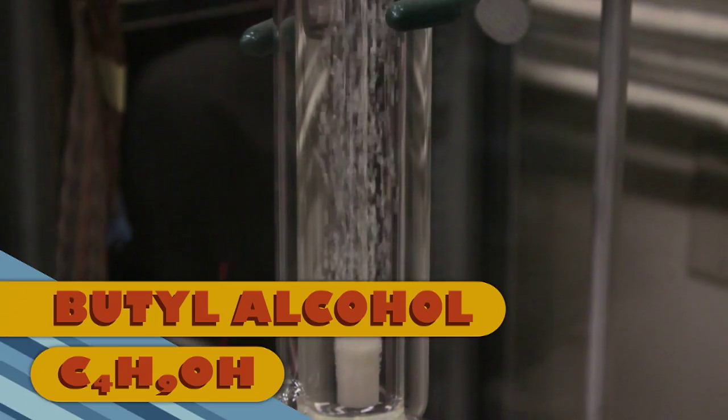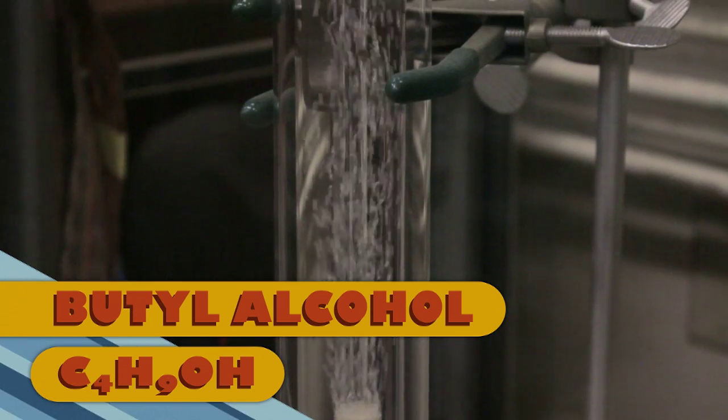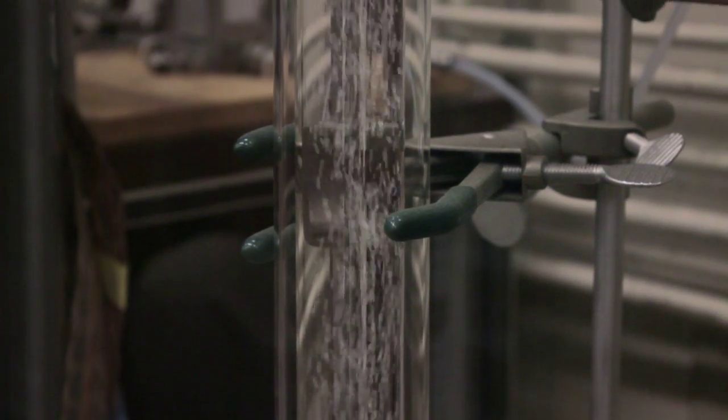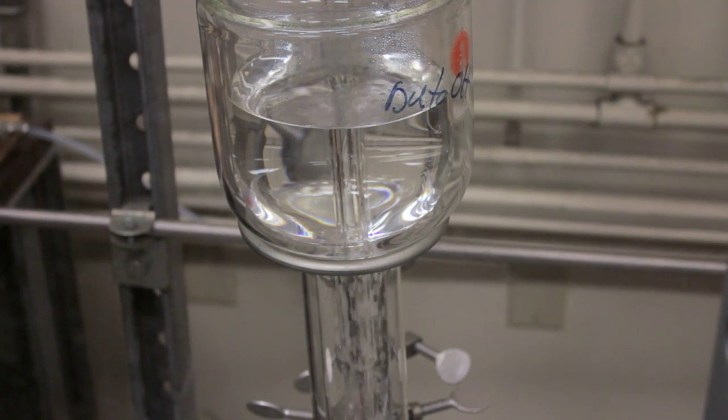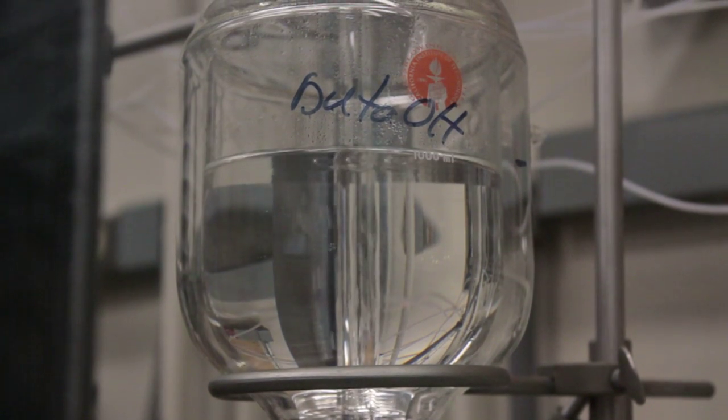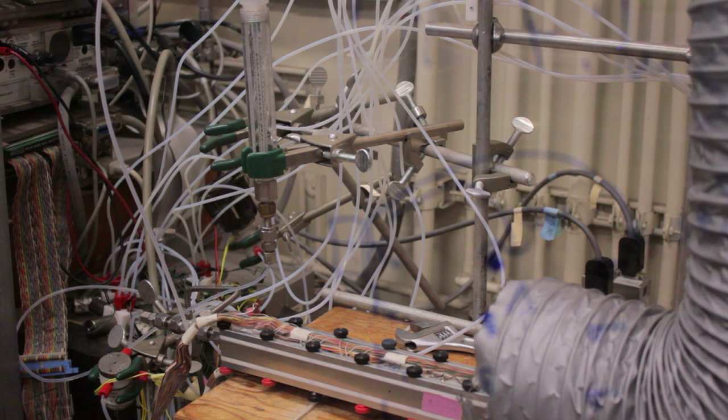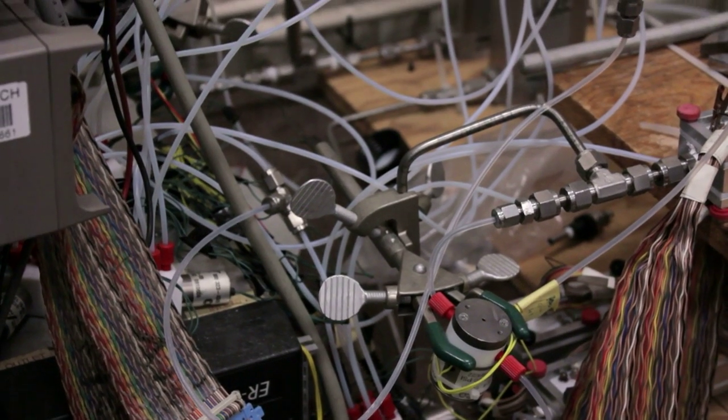We have a stream of air going down into this liquid, making bubbles. These bubbles come up with a saturated vapor of butanol. From there, the saturated vapor goes out and is diluted to the desired concentration, which is then fed to our sensor chamber.